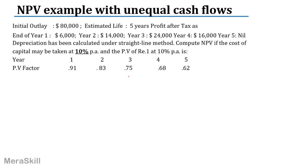Now, if you have unequal cash flows — the initial outlay is $80,000, estimated life is 5 years, and profit after tax is: year 1, $6,000; year 2, $14,000; year 3, $24,000; year 4, $16,000; and year 5, nothing. These are not the cash flows — they are the profit after tax. Depreciation has been calculated under the straight line method. We need to compute the net present value if the cost of capital is 10% per annum. The present value of $1 at 10% per annum is 0.91, 0.83, 0.75, 0.68, and 0.62.